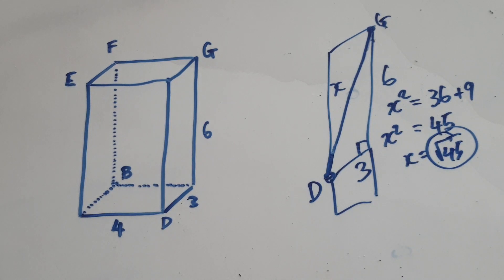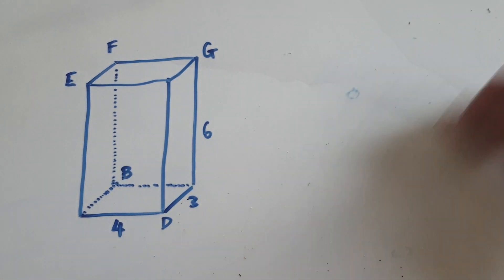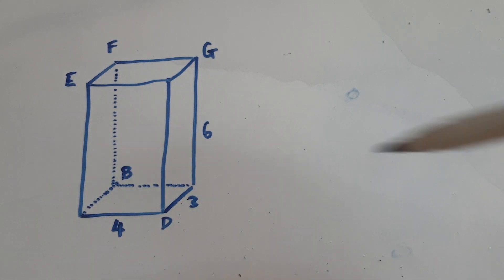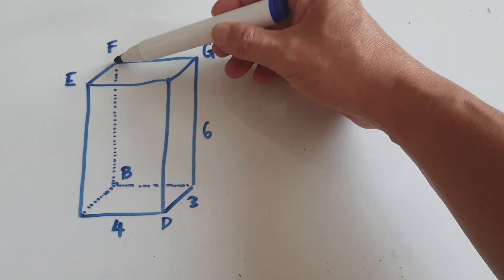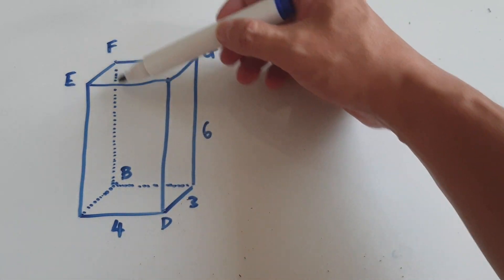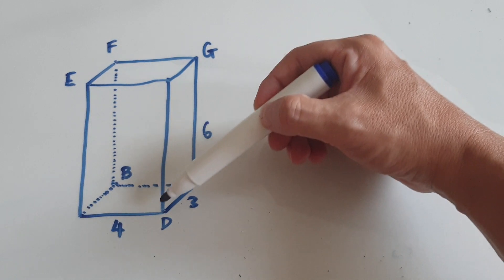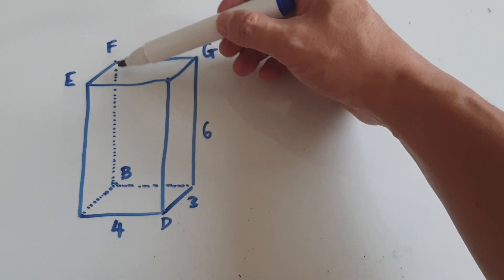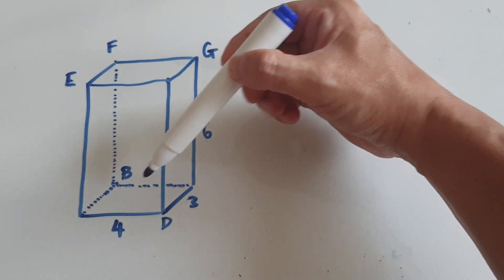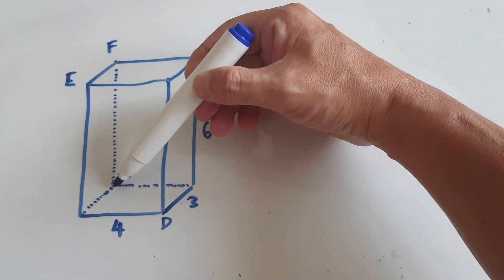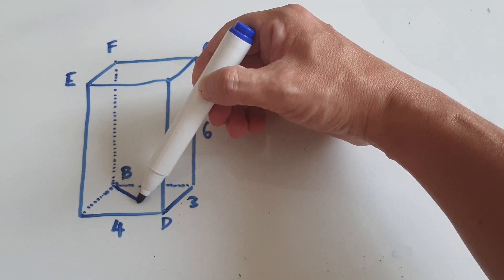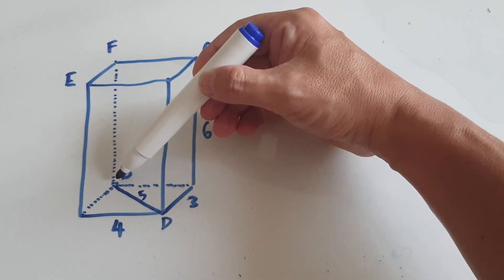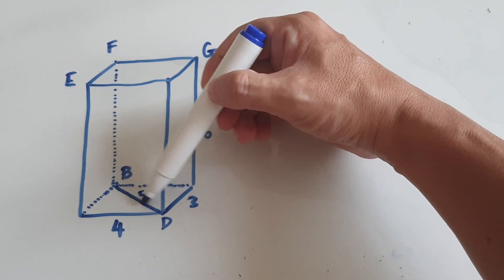And then for the last one — if you want to find DF. D is here, F is here. So this is the longest length of the cuboid, from one corner to the other corner. Earlier we worked out that this diagonal length here was 5 — right at the start of the video. This diagonal length here is 5.